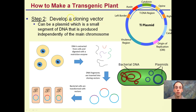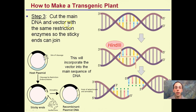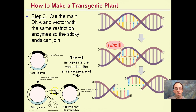How to make a transgenic plant: we develop a cloning vector — plasmids in which a small segment of DNA is produced independently from the main chromosome. These little circular plasmids from prokaryotic bacteria cells carry our gene of interest and replicate very quickly. E. coli can multiply every 20 minutes, so these plasmids replicate very fast. Step three: cut the main DNA and vector with the same restriction enzyme so the sticky ends can join. Here we have the HindIII site — cutting our main genome and gene of interest so they bind together, incorporating the vector into the main DNA sequence.